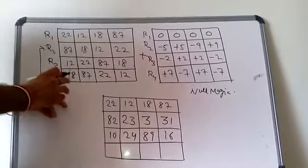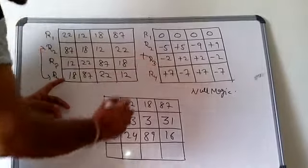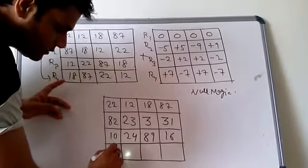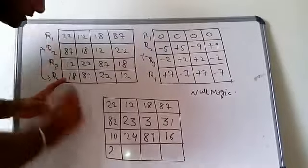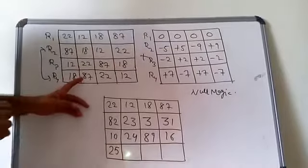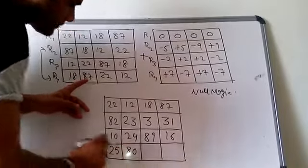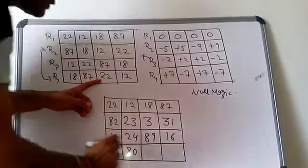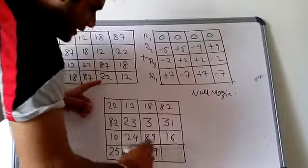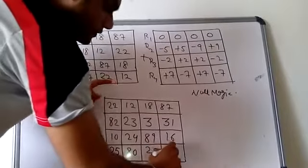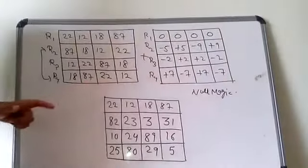Now you'll see 18 plus 7, that is 25. 87 minus 7, that is 80. 22 plus 7, that is 29. 12 minus 7, that is 5.